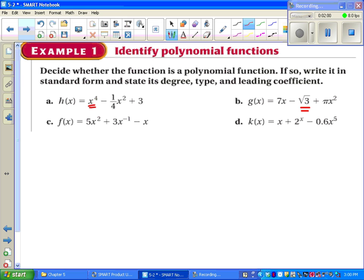And then you decide yes or no. Is this a polynomial? If so, write it in standard form, then state its degree, type, and leading coefficient. Leading coefficient means the number in front of the first term. So go ahead and try that for a. Pause the video. See if you get the same thing as me before we go on to b, c, and d.